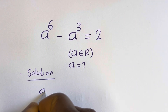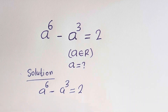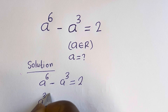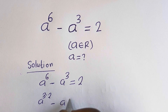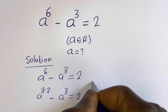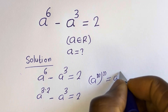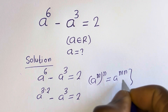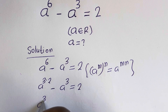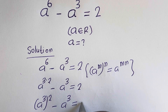We have a to the power of 6 minus a to the power of 3 is equal to 2. Note that a to the power of 6 can be written as a to the power of 3 multiplied by 2, and take note that if you have a to the power of m to the power of n, this is equal to a to the power of mn. So this becomes a to the power of 3, to the power of 2, minus a to the power of 3, is equal to 2.